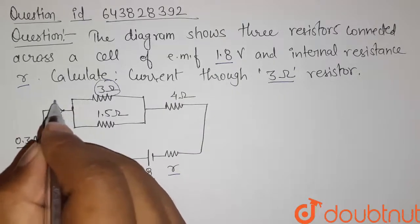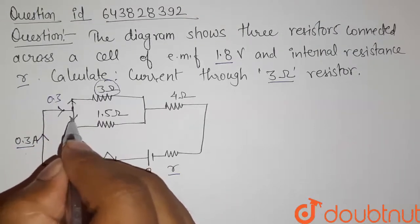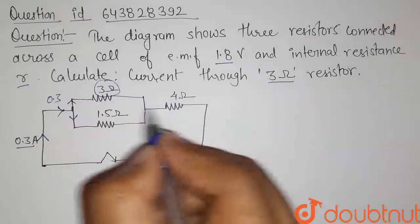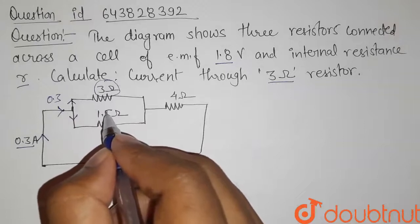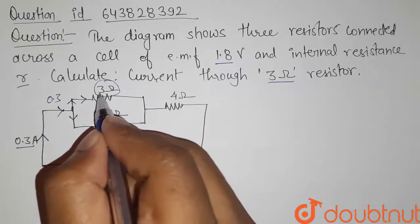So this current will divide in these two paths through this junction. And we know the current is divided into inverse ratio of resistance. So we have to find the value for current flowing through this resistor.